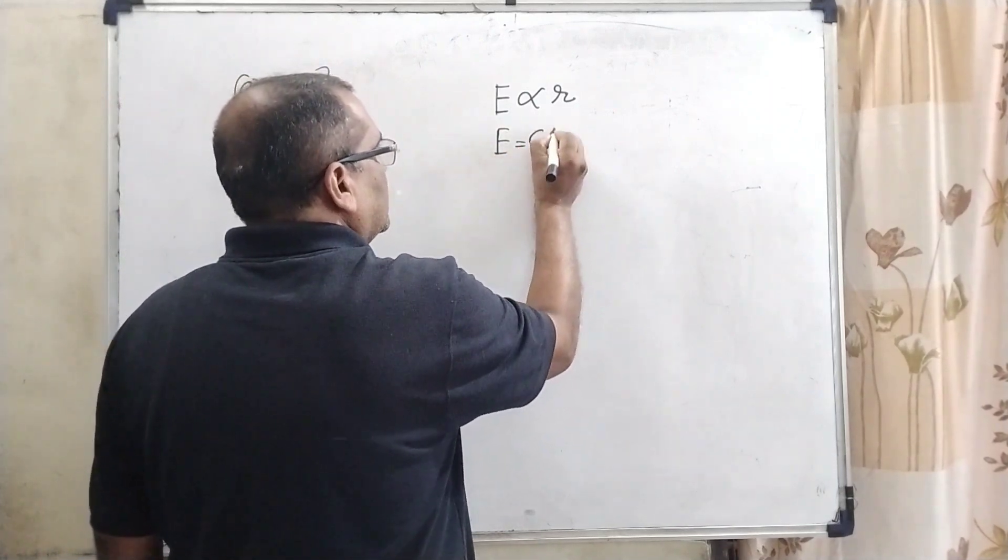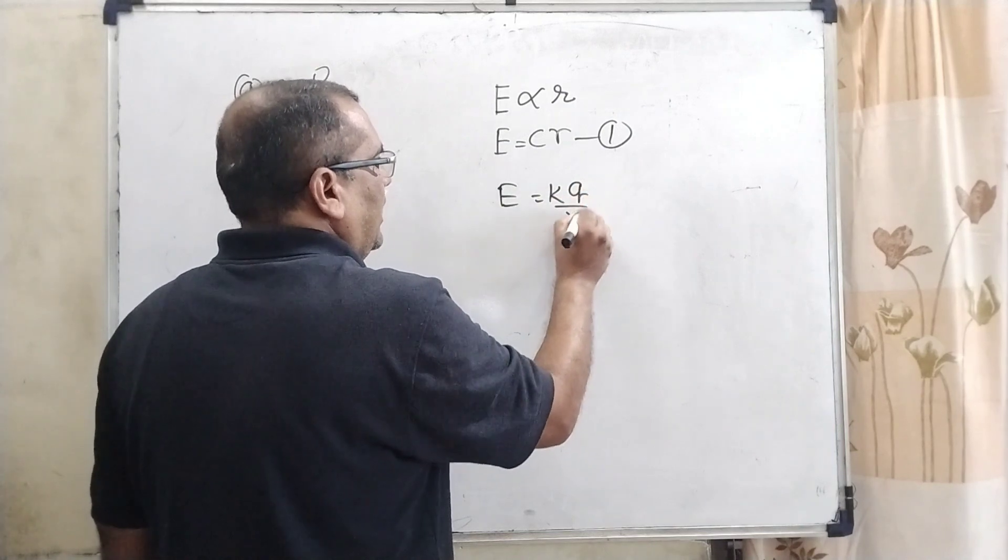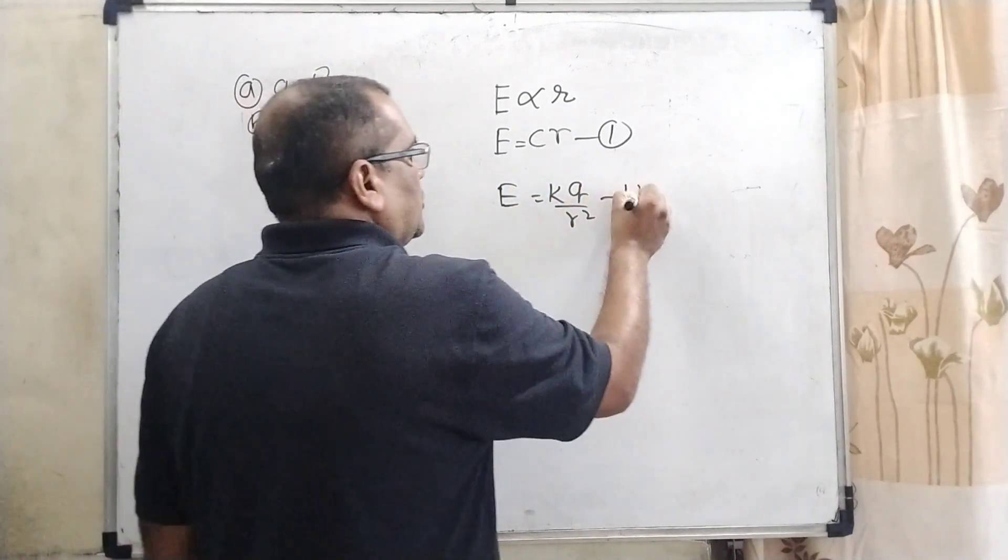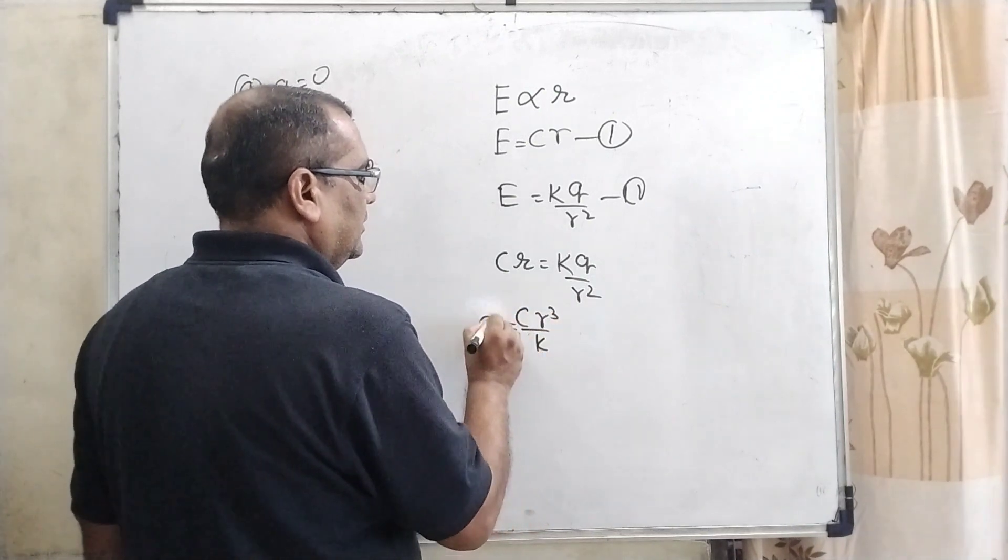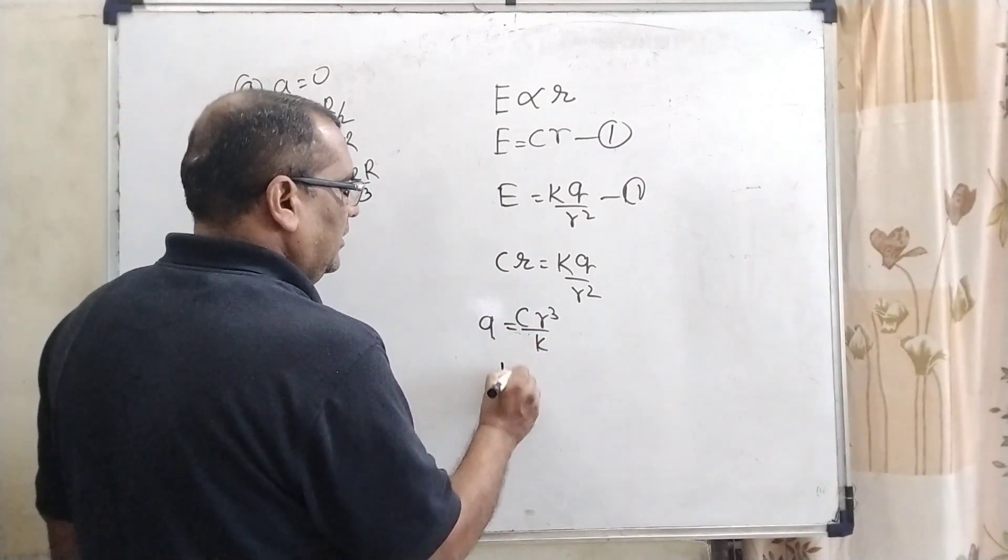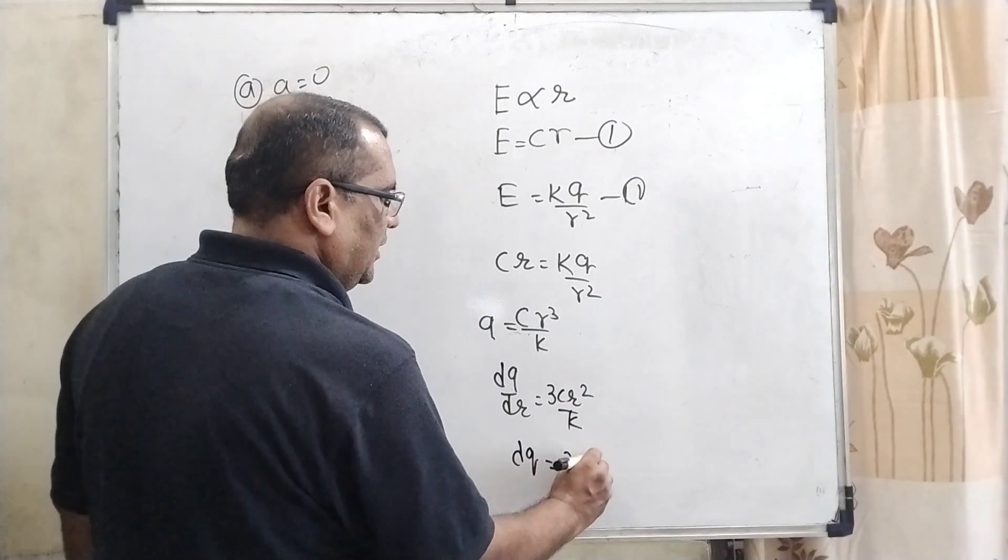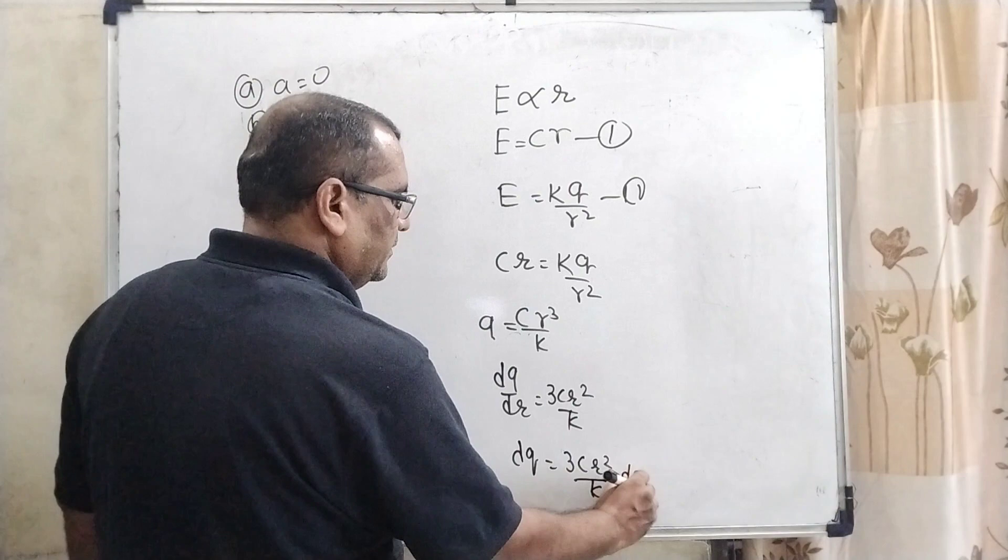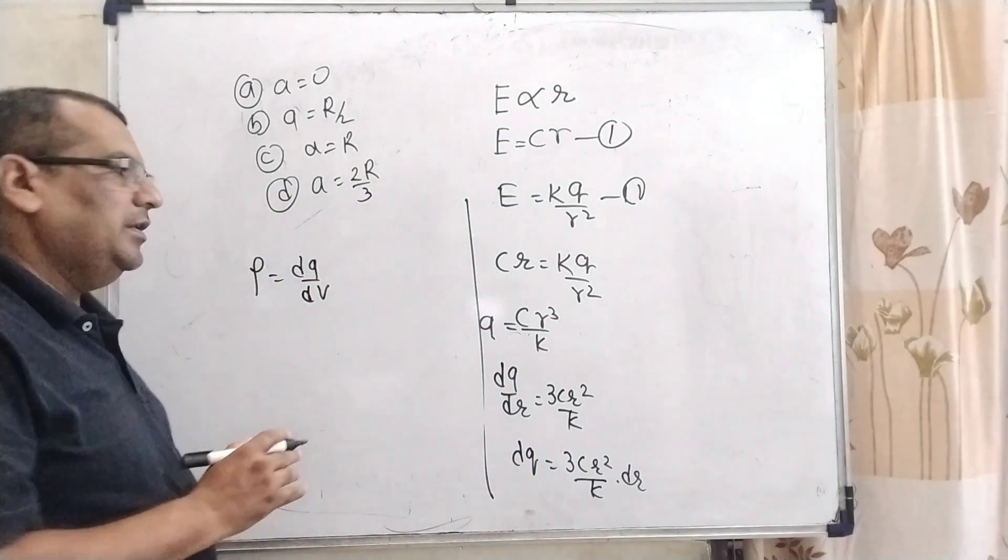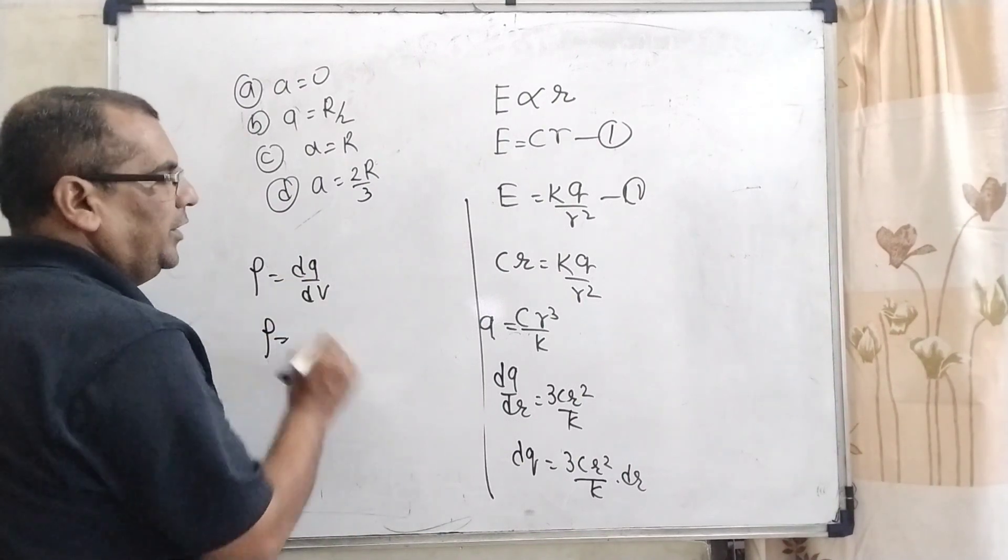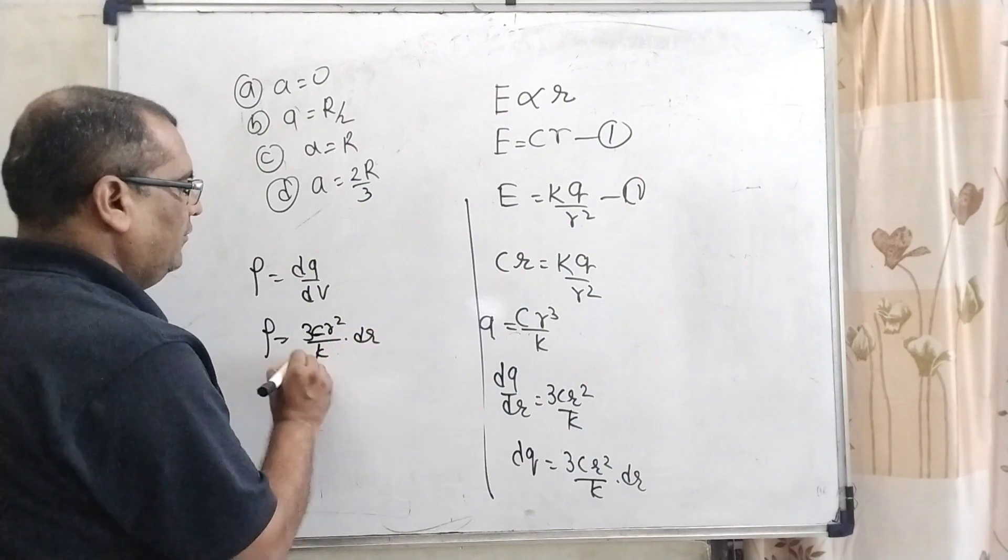But in the case of E is directly proportional to r, it is given in the question. Let us consider another constant C r. Given in the equation, that is the first equation. And we know that electric field is K q by r square according to the formula of electric field. So comparing this first and second, C r equal to K q r square, then C r³ upon k, that is the value of q. Now differentiate with respect to r, we will get 3C r² by k. So dQ can be written as 3C r² by k into dV.